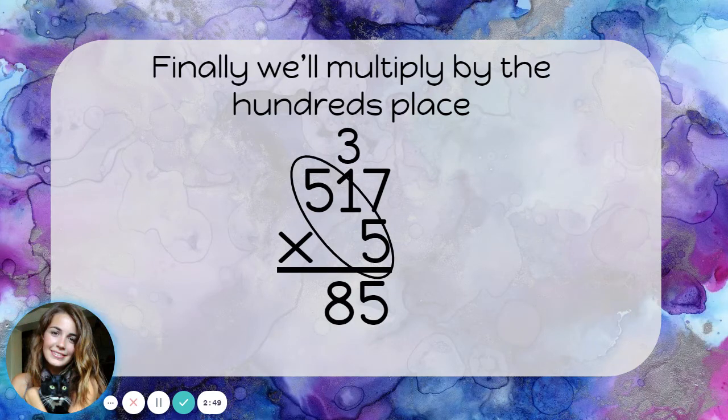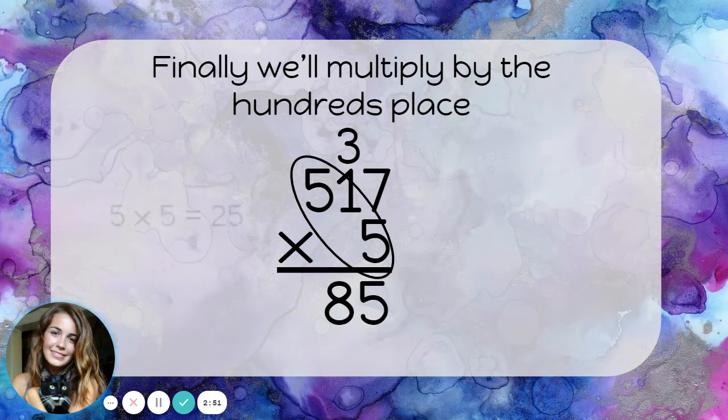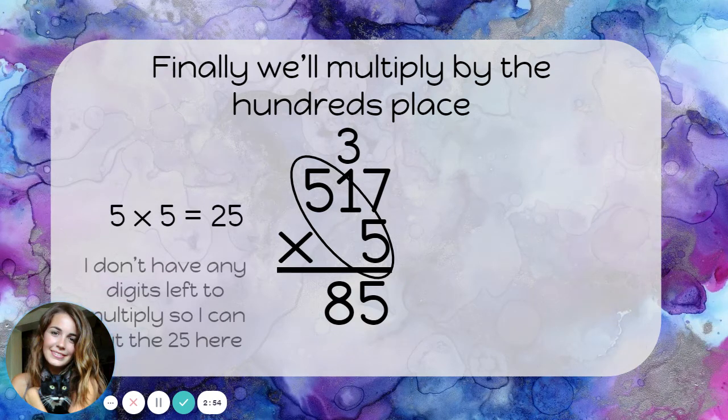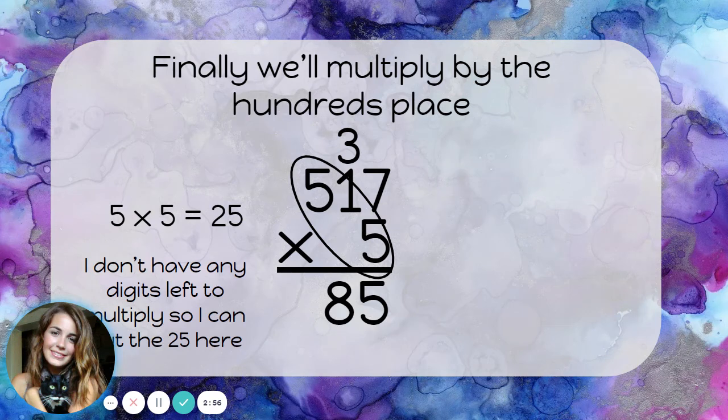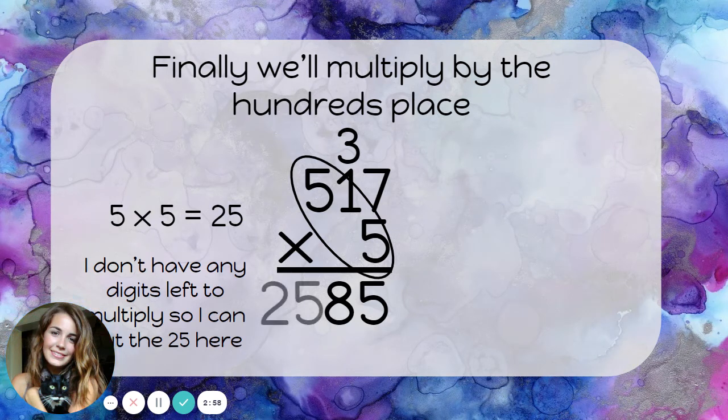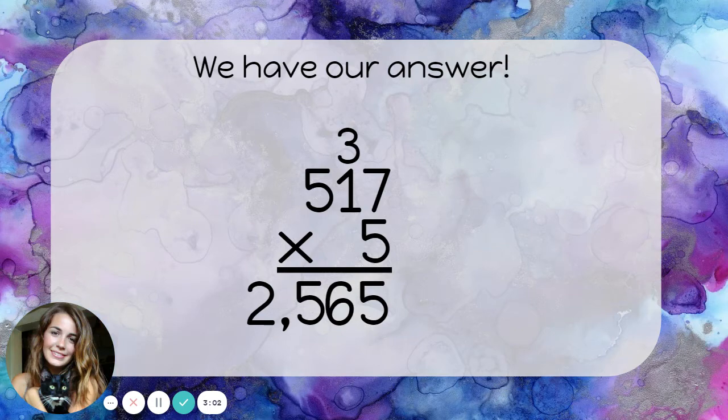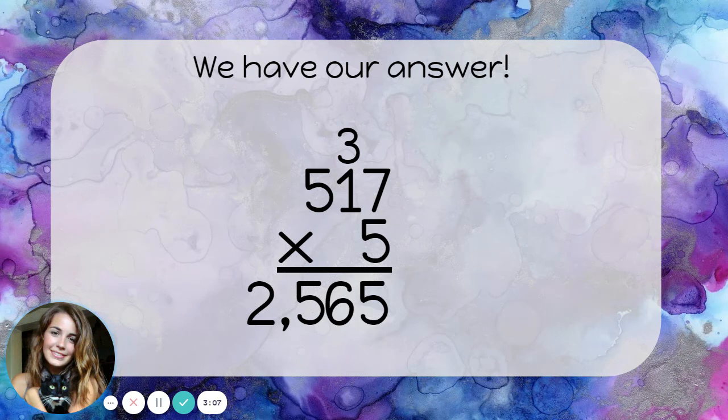Finally, we'll multiply by the hundreds place. 5 times 5 is 25. And I don't have any digits left to multiply, so I can actually put the 25 here. We have our answer. 517 times 5 is 2565.